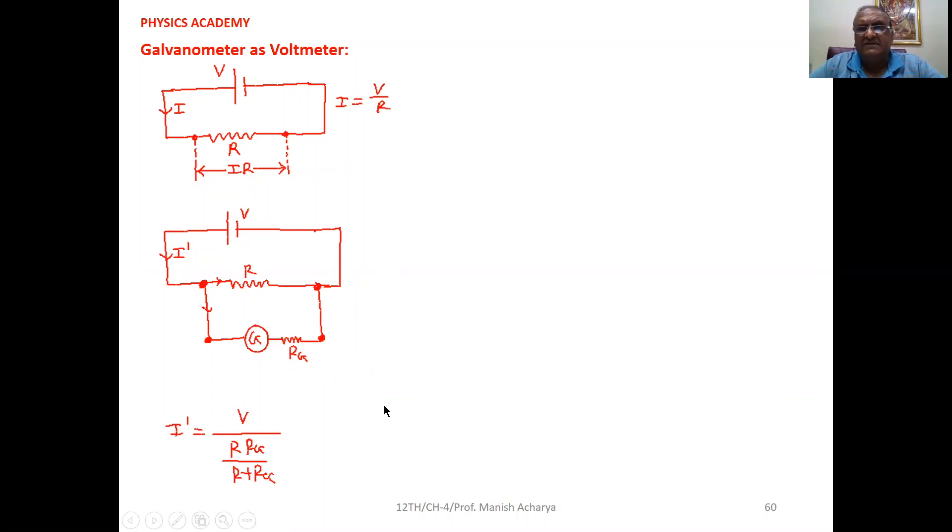Now first understand mathematically. If you want to keep your current equal to V by R, then concentrate here. If we take RG very much greater than R, then RG plus R can be written simply equal to RG. So in this equation RRG upon R plus RG, this R plus RG is nearly equal to RG. So RG, RG cancel, and your resultant resistance comes to R.